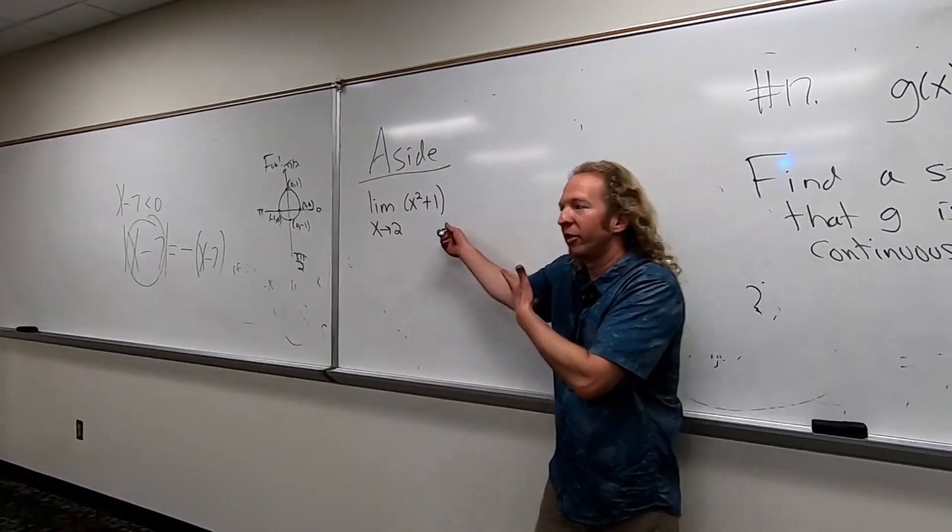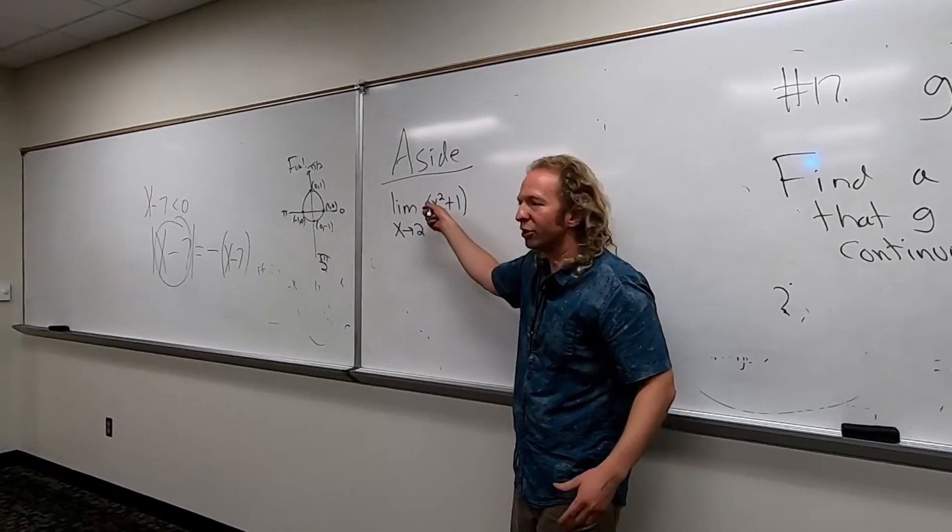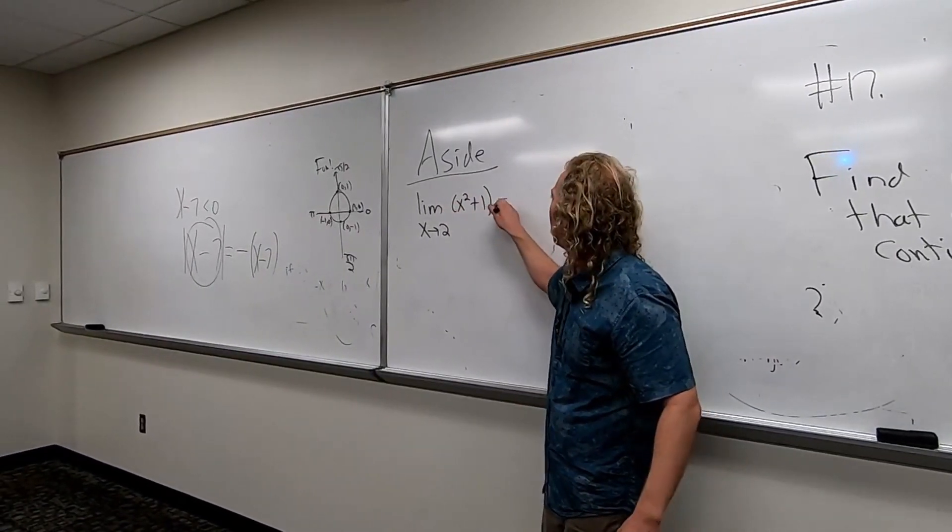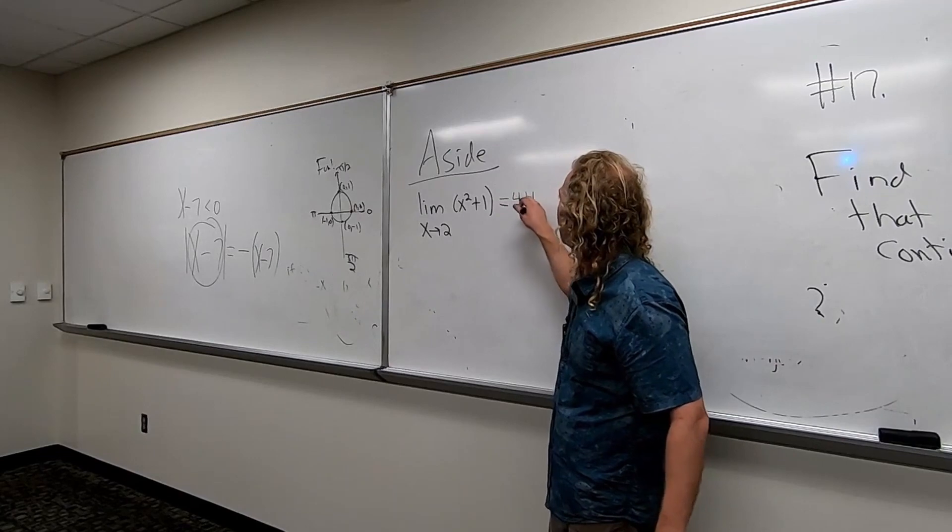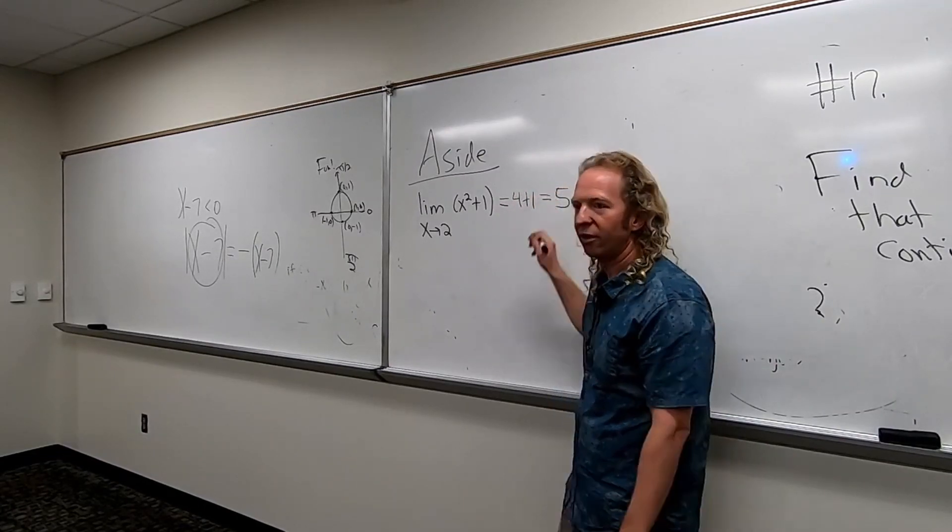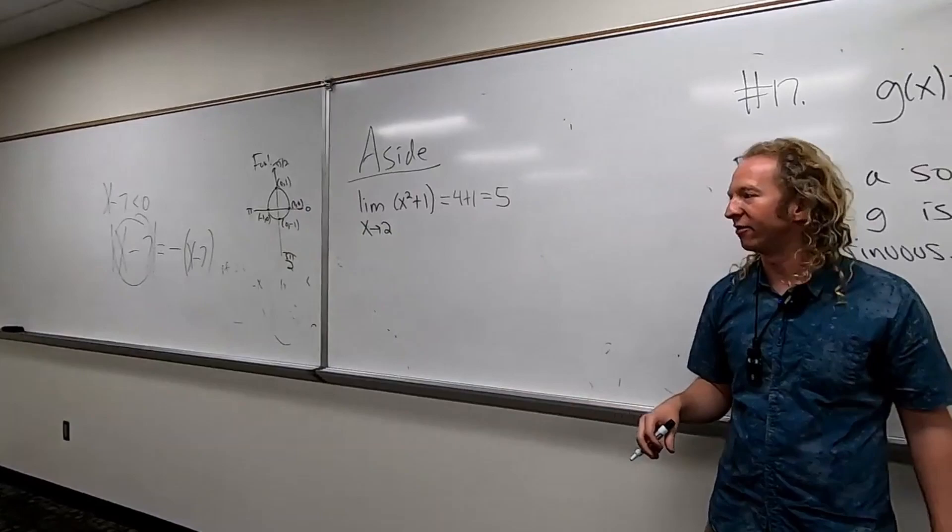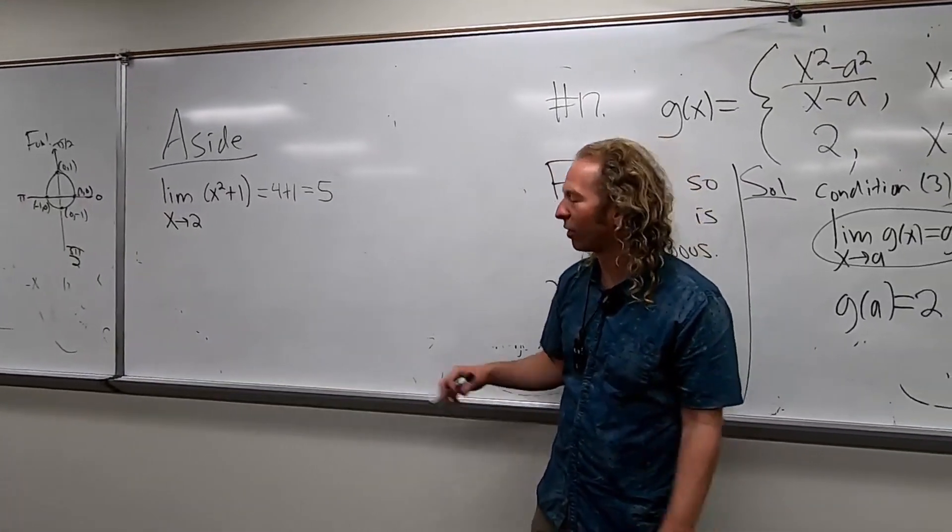So in this case, we can plug the number in. It's super easy. We just get 2 squared plus 1, so we get 4 plus 1, which equals 5.